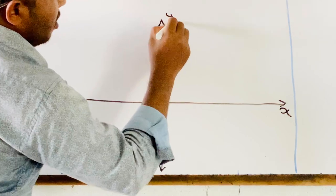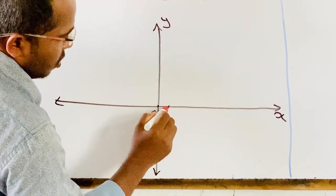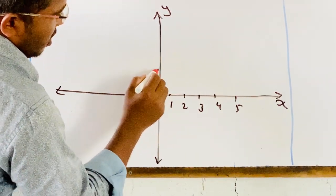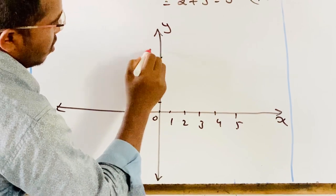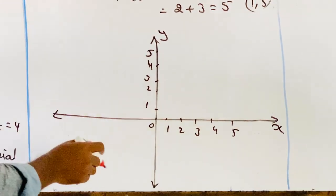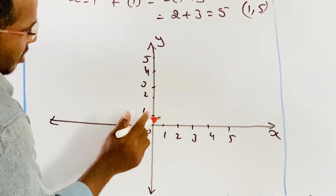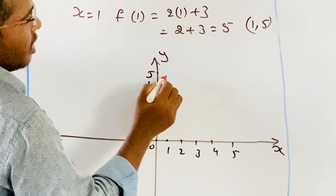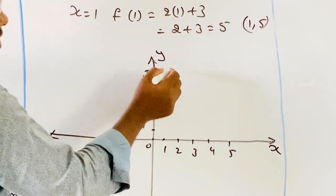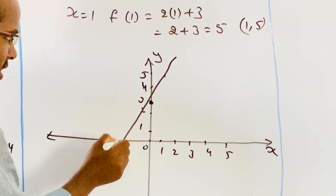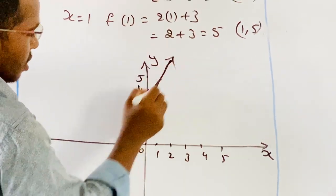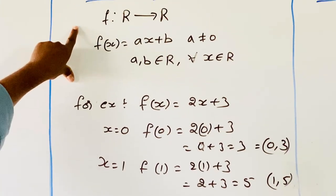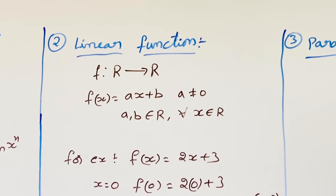Drawing the x-axis and y-axis with values 0, 1, 2, 3, 4, 5 on both axes. Plotting the points (0, 3) and (1, 5), a linear function forms a straight line on the graph.